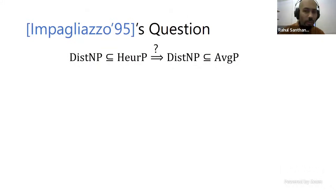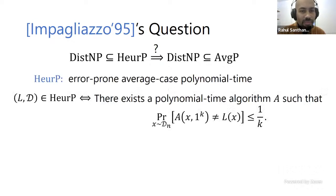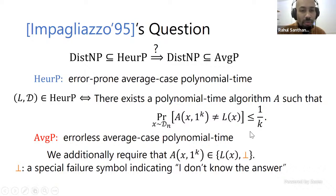Impagliazzo asked this question in his original survey: if NP is in heuristic-P, if you can solve distributional NP problems in the error-prone sense, can you also solve them in the errorless sense? Here's the definition of the error-prone sense: there is an algorithm that gives the right answer with probability at least 1 - 1/K over the distribution. In the errorless sense, for any instance you either give the correct answer or 'don't know', and you answer correctly with probability at least 1 - 1/K.